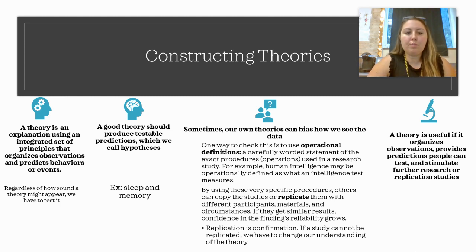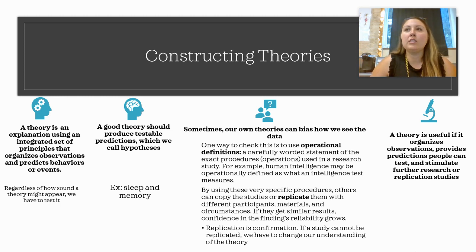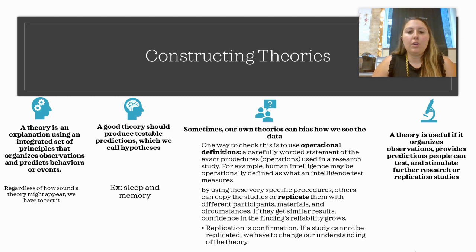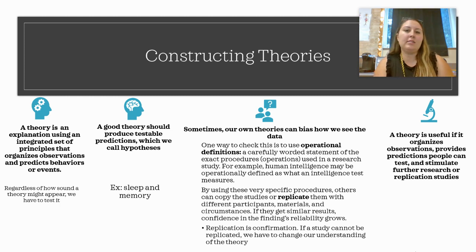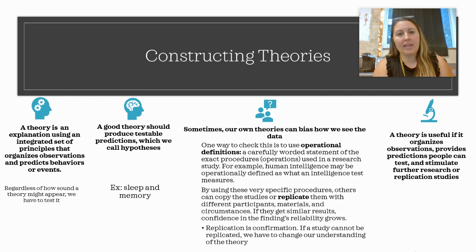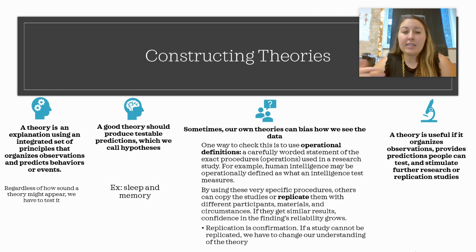A good theory should produce testable predictions, which we call hypotheses. For example, let's say you developed a theory because you've witnessed time and again that people who get poorer sleep tend to do worse on tests, so your theory is that sleep affects memory. Your hypothesis needs to be predictable and specific — something like: if a person sleeps fewer than five hours a night, their performance on a test will suffer versus if they get a full night's rest. It has to be testable.